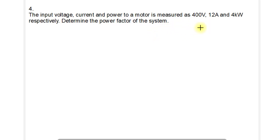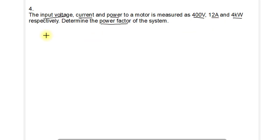Question 4: the input voltage, current, and power to a motor are measured as 400 volts, 12 amperes, and 4 kilowatts respectively. We need to determine the power factor. The input power is given in kilowatts, indicating it is active or real power. The formula relating real power to line voltage, line current, and power factor is P = √3 × VL × IL × cosφ.